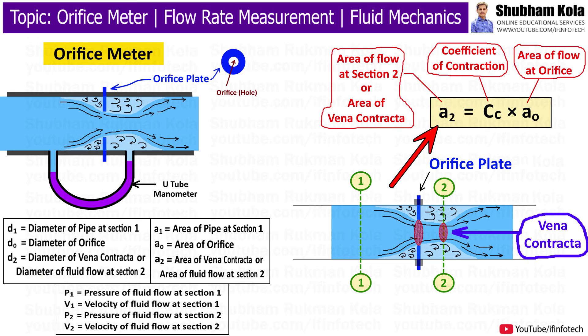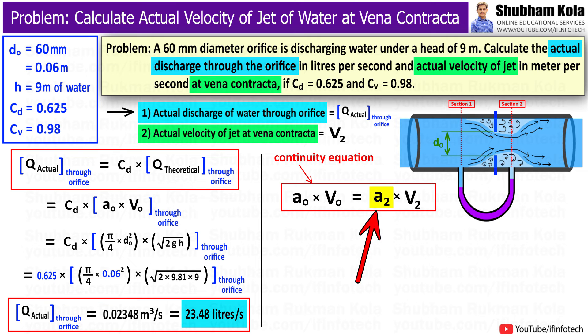We know the relation for A₂: the area of jet at vena contracta equals CC × A₀. Hence, in the continuity equation, I will substitute A₂ = CC × A₀. Here, A₀ cancels out.